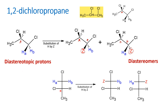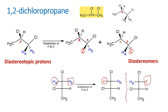Let us see the Fisher projection of 1,2-dichloropropane. When HA is replaced by Z and HB is replaced by Z in the two respective molecules, we have two possibilities. If you draw a mirror plane in between the two structures, you can see they are not mirror images of each other. They have two chiral centers, and that is the reason why they are called diastereomers.